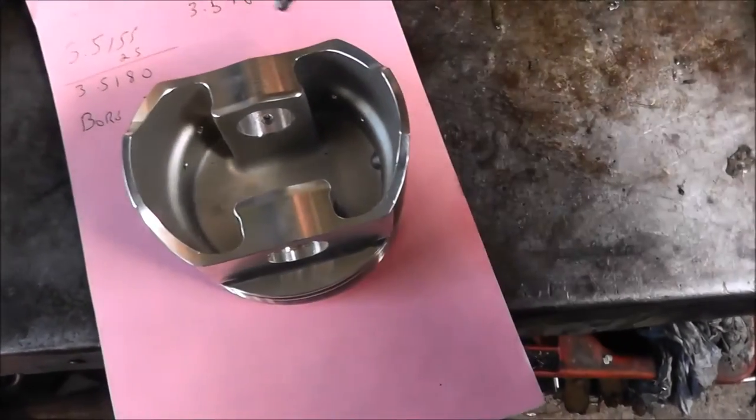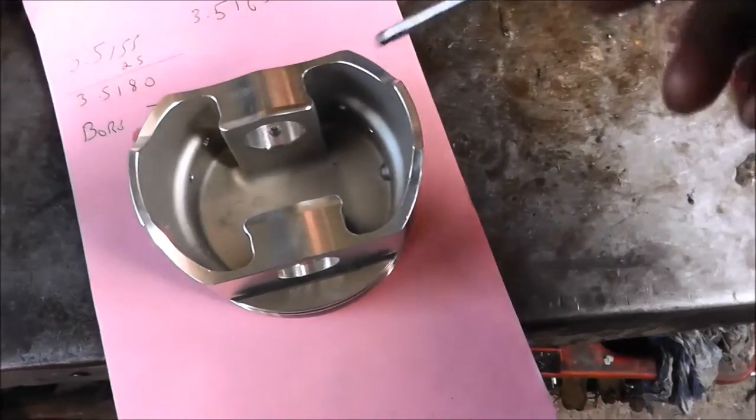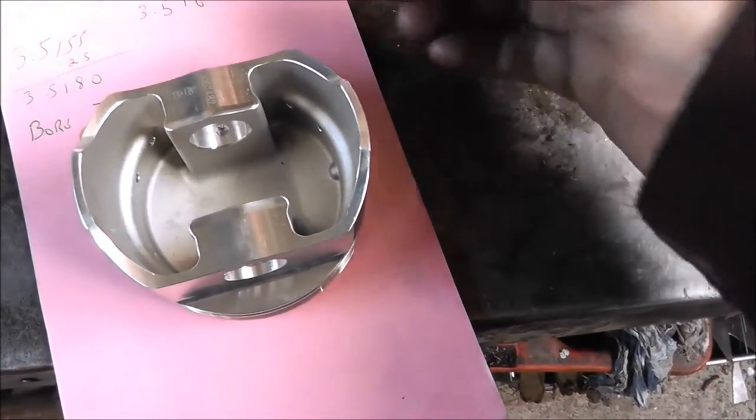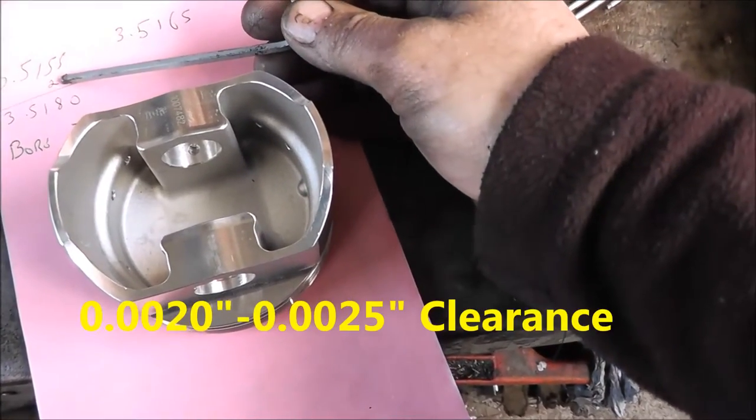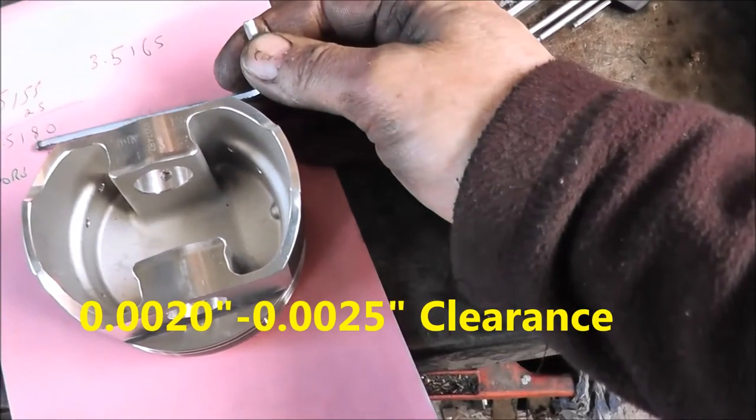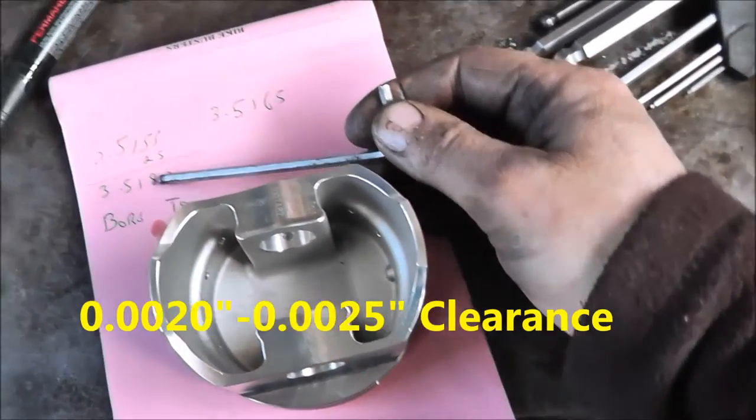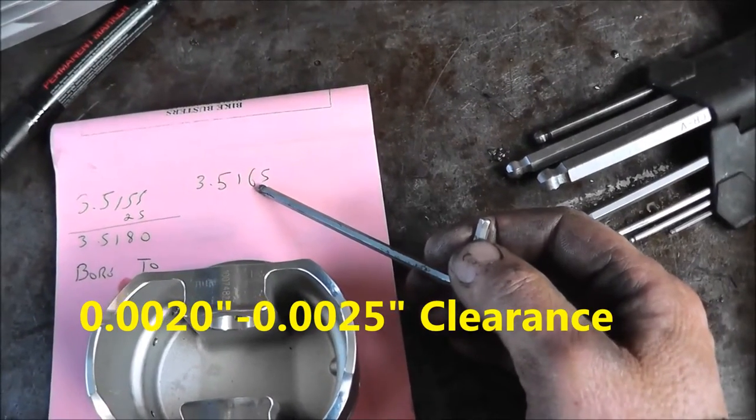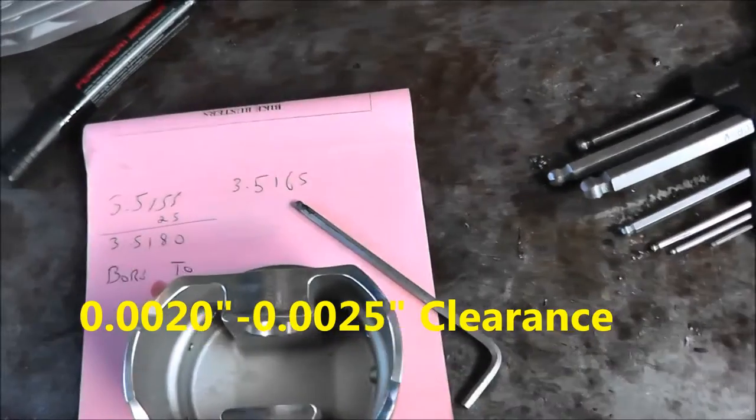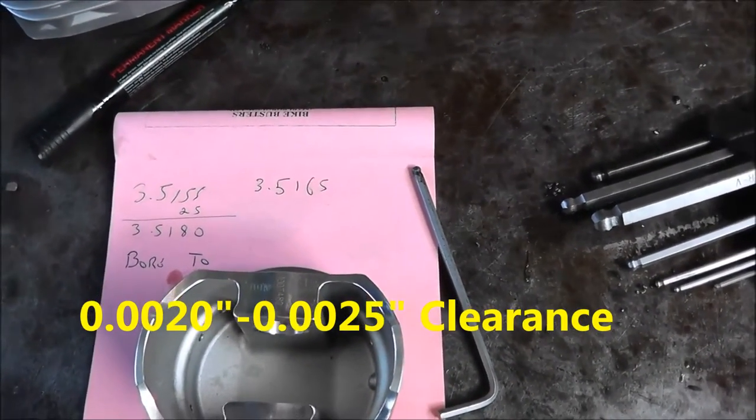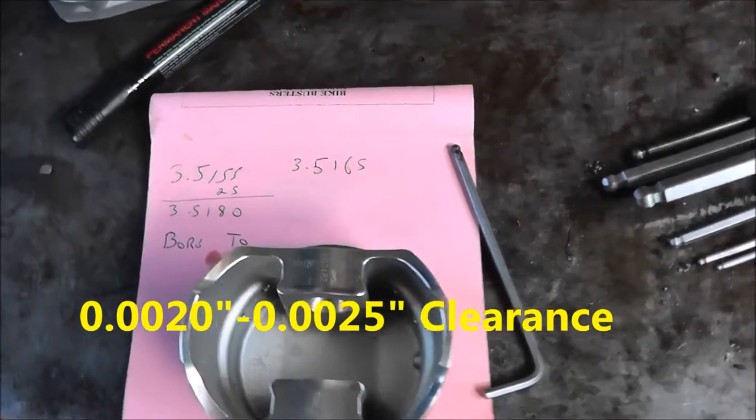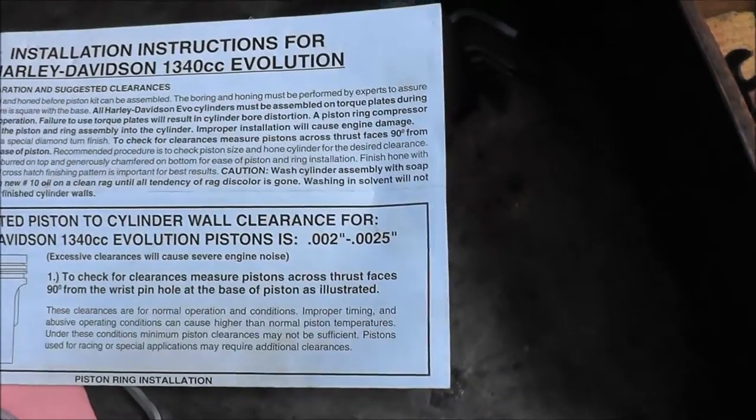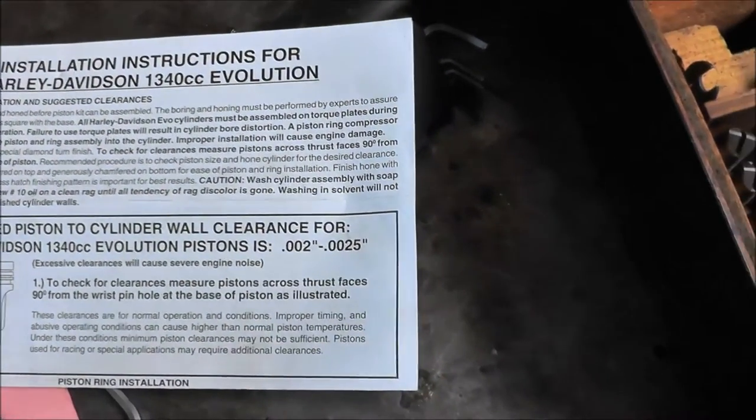I measured the piston, and the diameter at the skirt at 90 degrees to the gudgeon pin is 3 inches 515 and a half thou. With a 2.5 thou clearance, the bore will need to be 3.5180. So we'll cut it to 3.5165. That will give us 1 to 1.5 thou honing, which will give us about 2.5 thou clearance. The instruction sheet says 2 to 2.5 thou clearance.